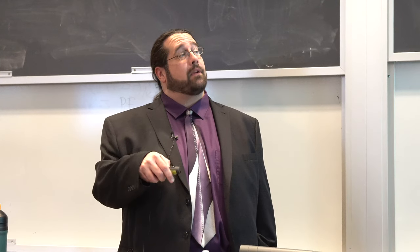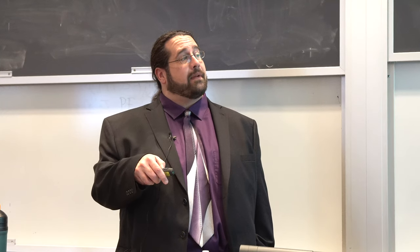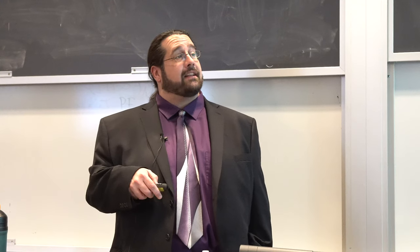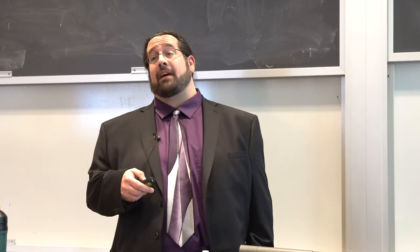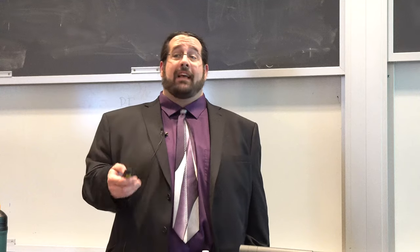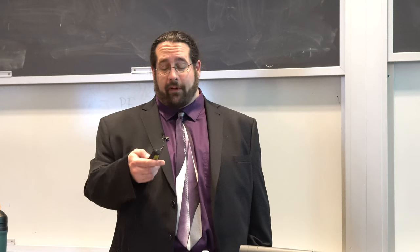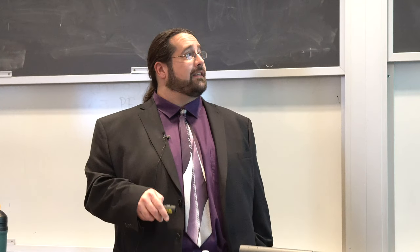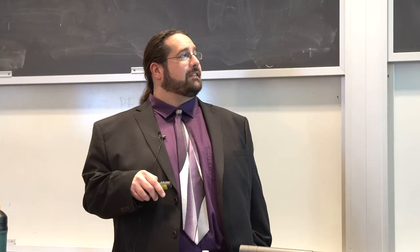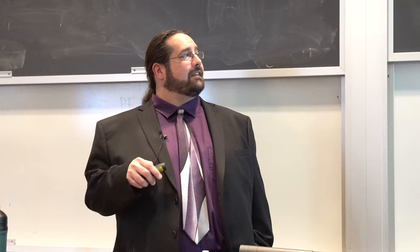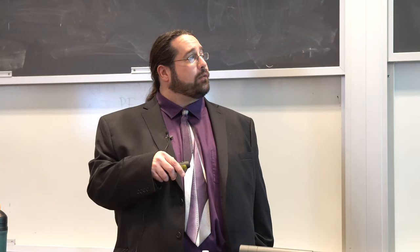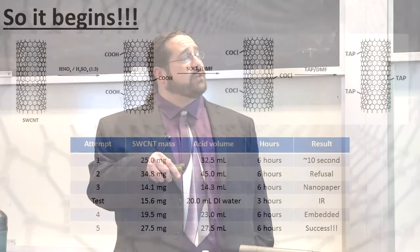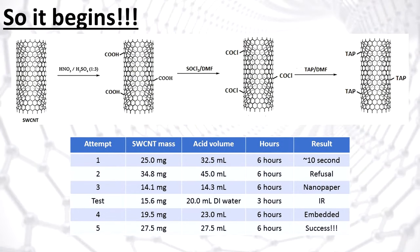If attaching two porphyrins simultaneously was successful, phase four was to take the carbon nanotube, anchor it to a piece of titanium oxide glass, and try to create a photovoltaic cell. So this is what I tried to do. I took some single-walled carbon nanotubes, threw them in an acid solution, and sonicated it for six hours.